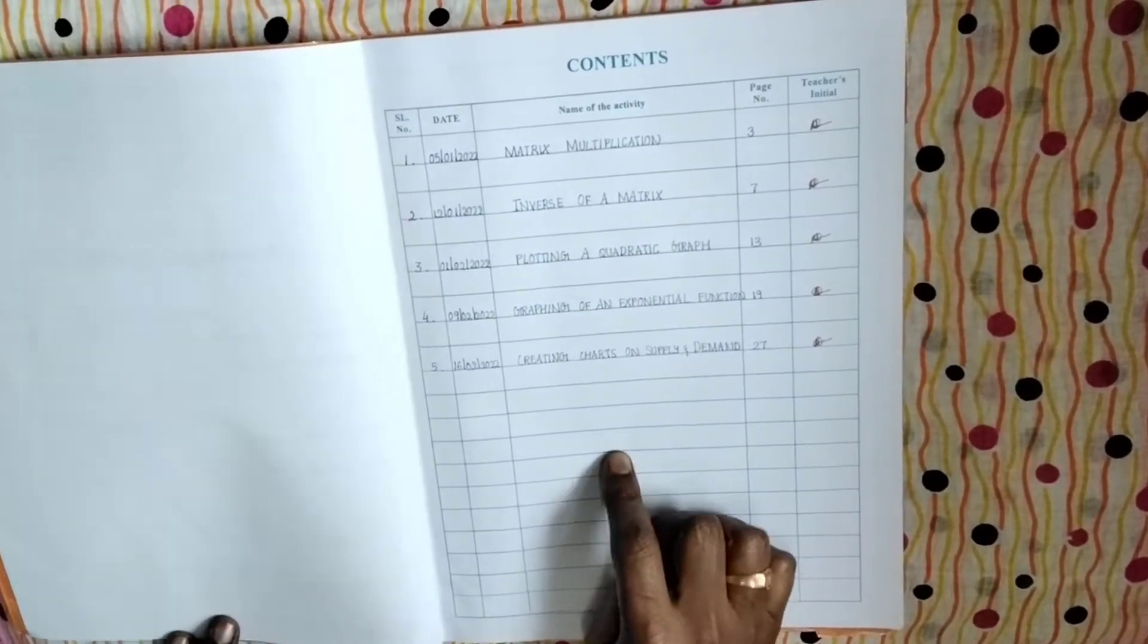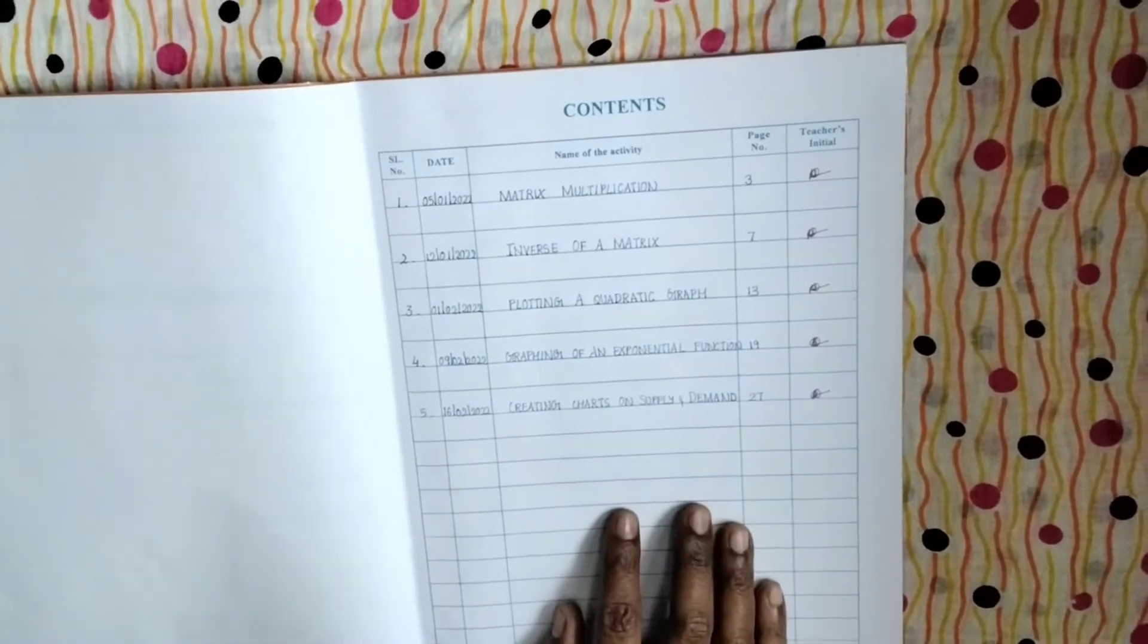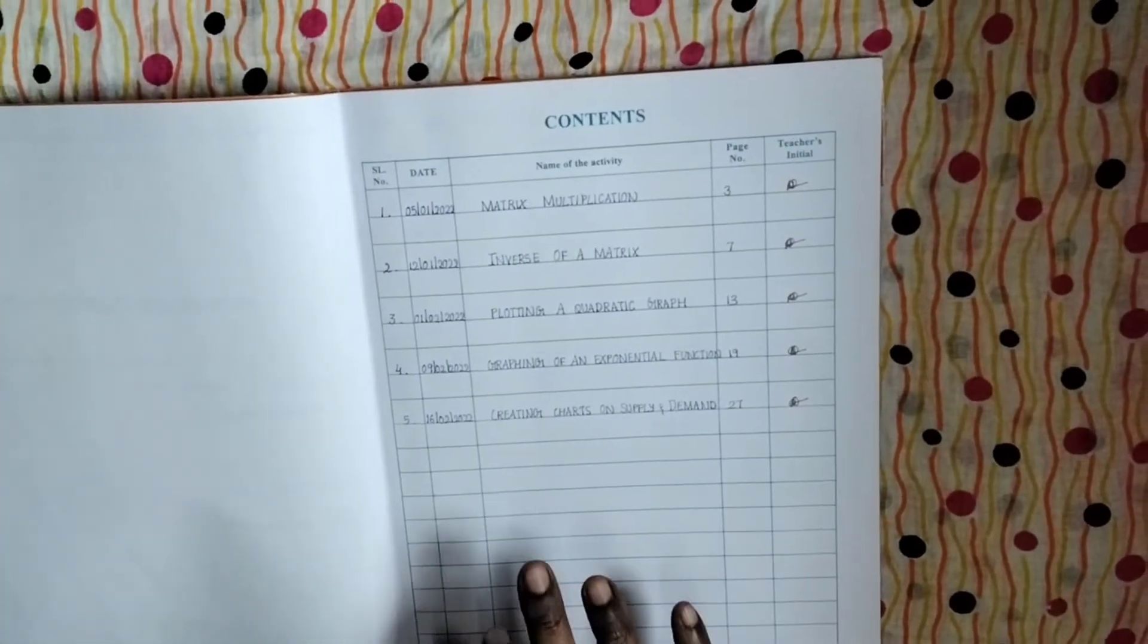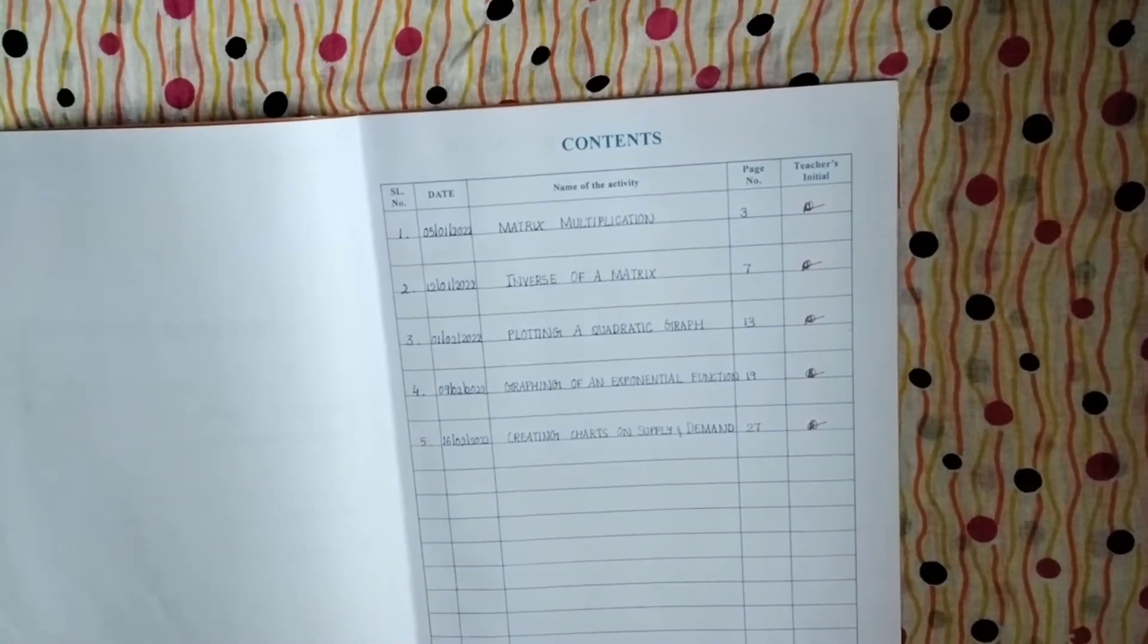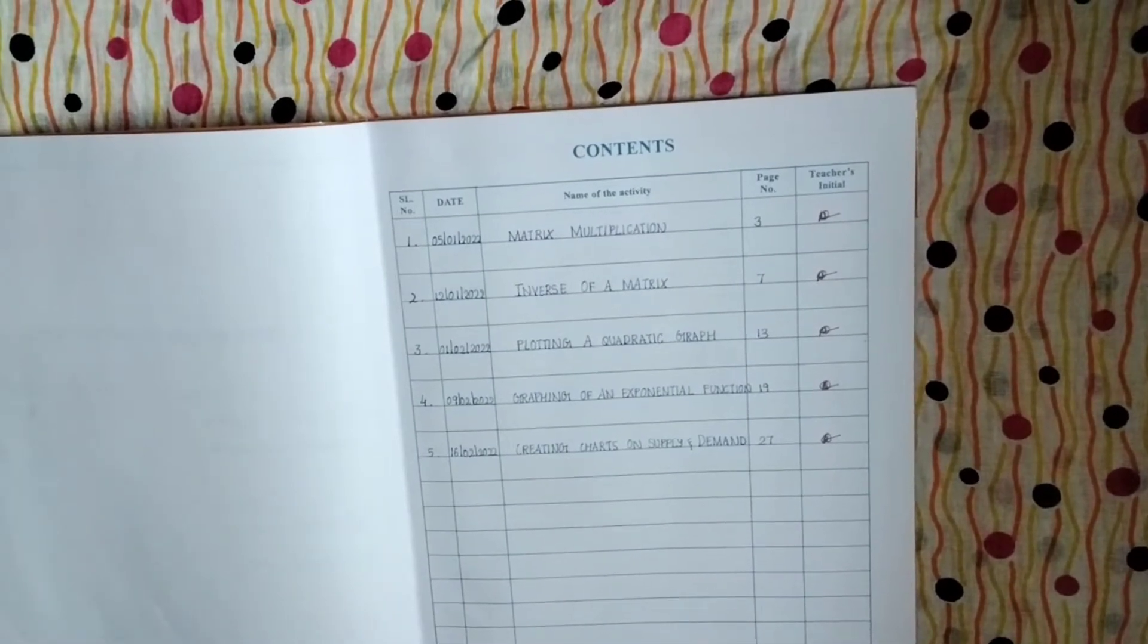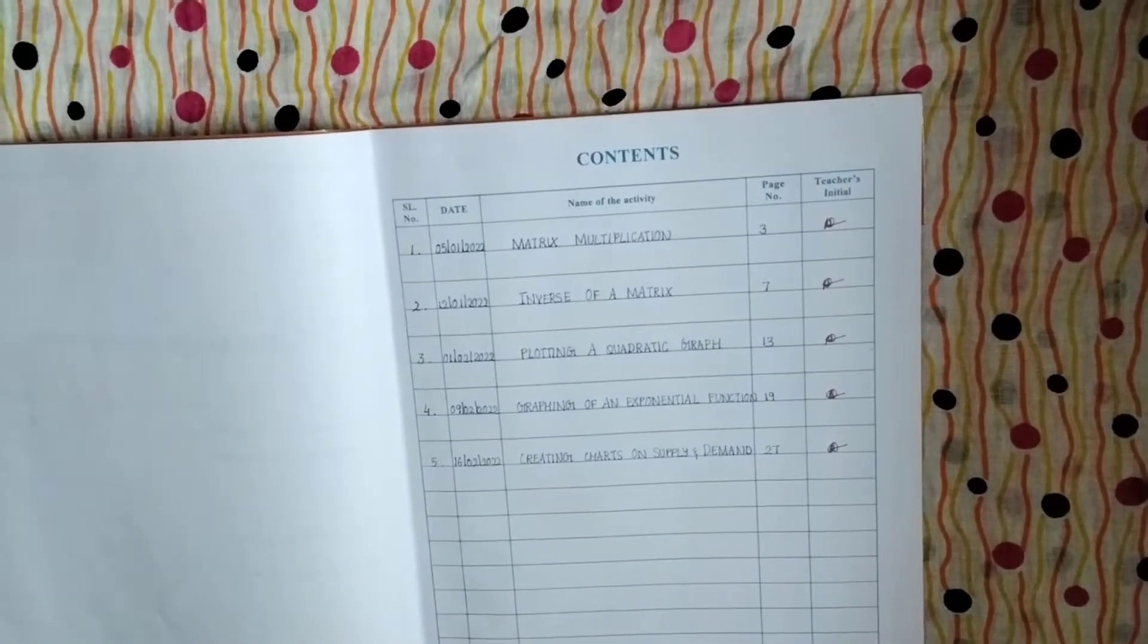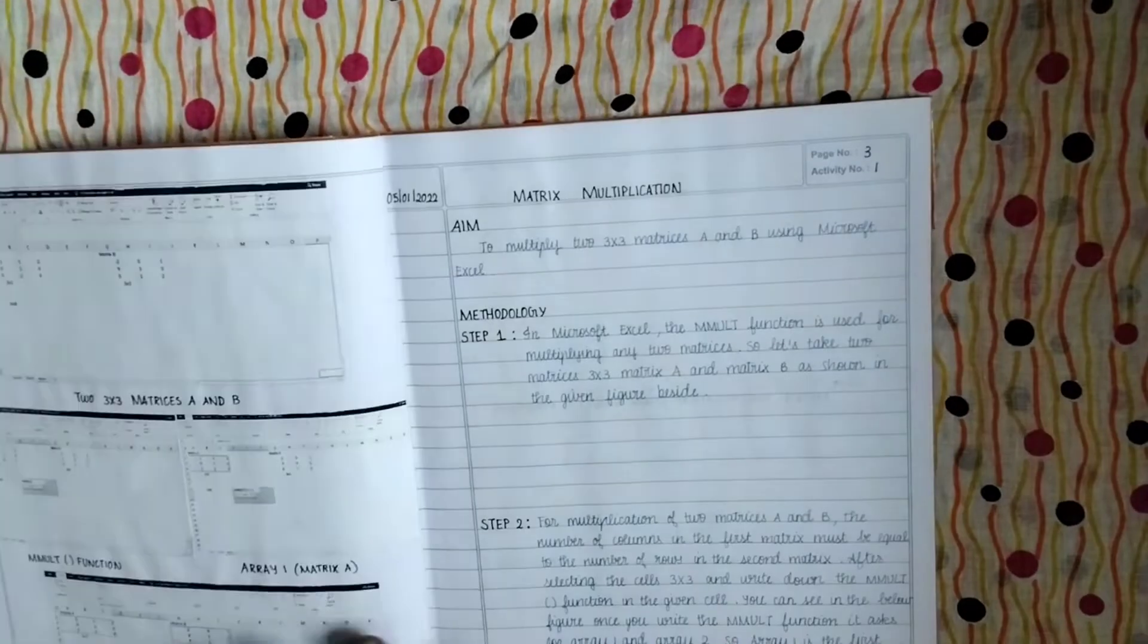Activities: matrix multiplication, inverse of a matrix, plotting a quadratic graph, graphing of an exponential function, and creating charts on supply and demand. All these different activities are already there given in the handbook. There are various other activities, around 30 activities are there, out of which I have selected five for my students.